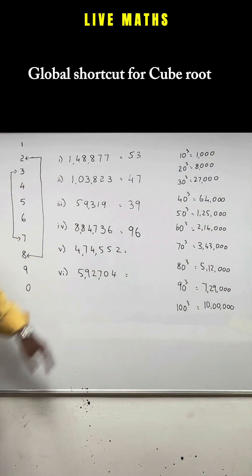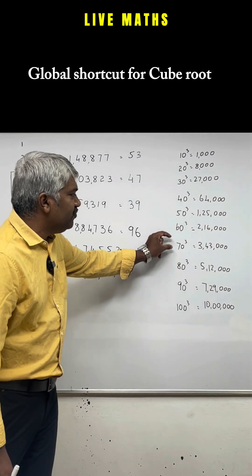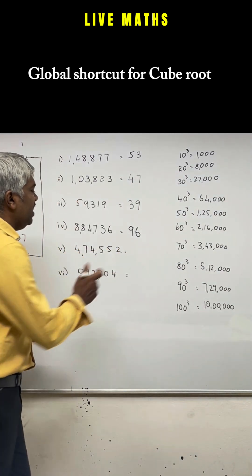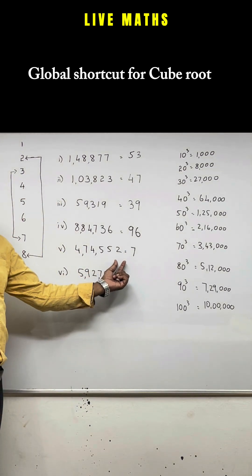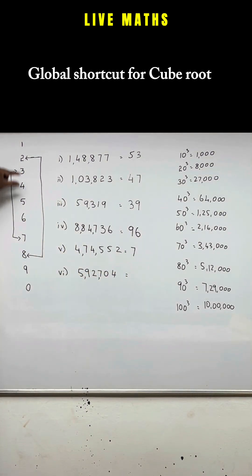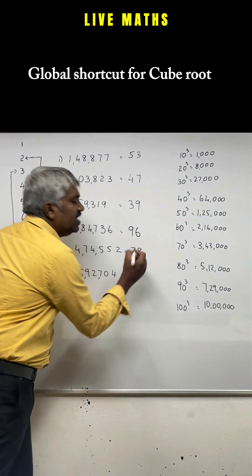Then 4,74,000. Where does 4,74,000 come? It comes between 70 and 80, which should be 70s. Look into the last number 2. 2 is connected to 8. So your answer is 78.